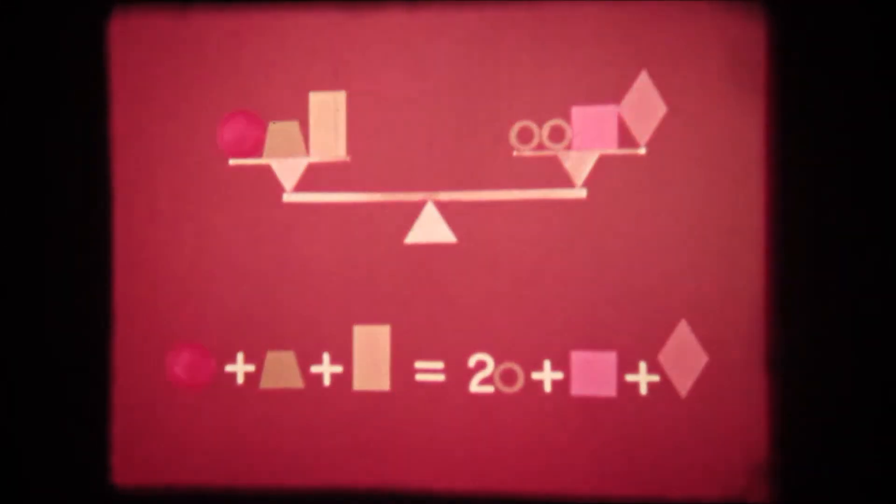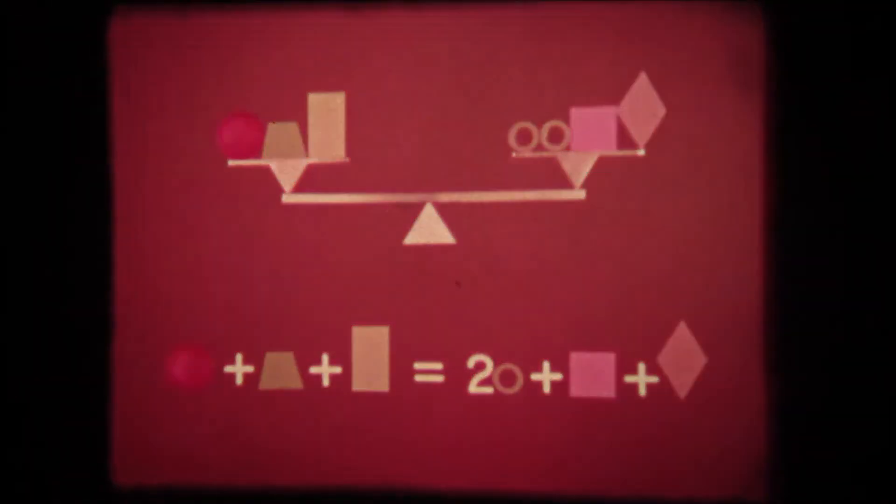This equation says that the sum of all the quantities on one side is exactly equal to the sum of all the quantities which are on the other side. In algebra, the two sides of an equation are actually different statements for the same number.